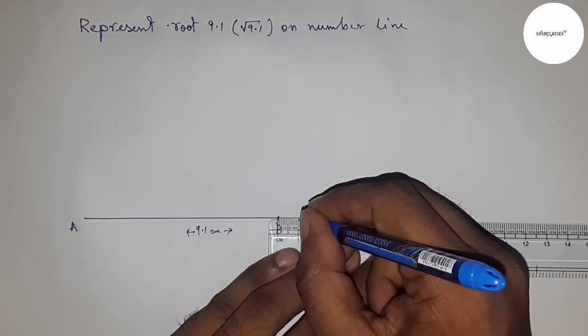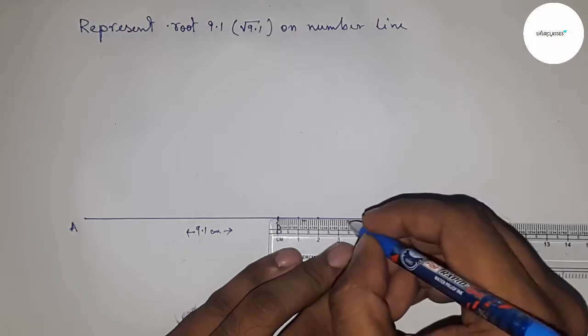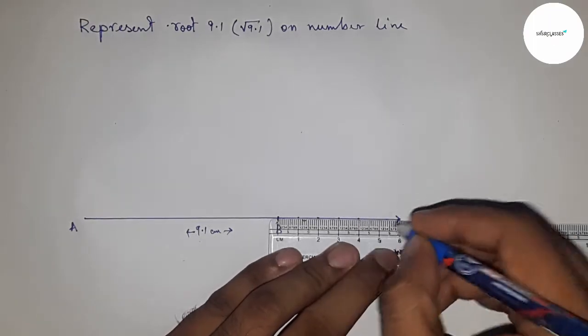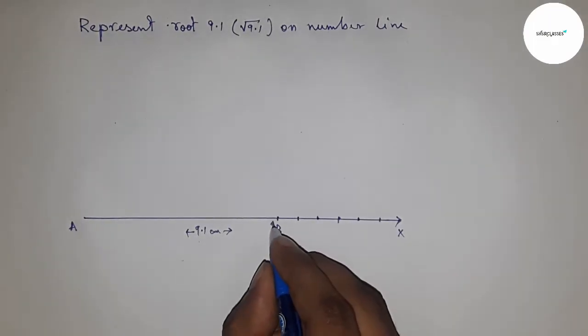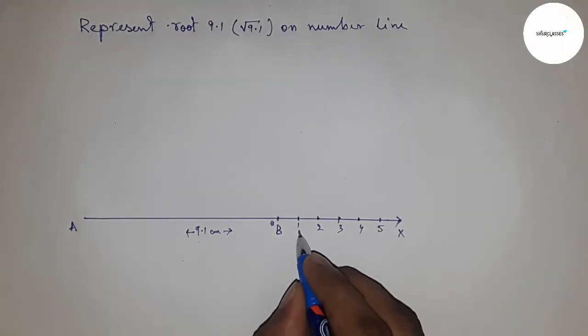Next, mark the numbers on the line from B to X: 0, 1, 2, 3, 4, 5, 6, and so on. Mark point C at 1.